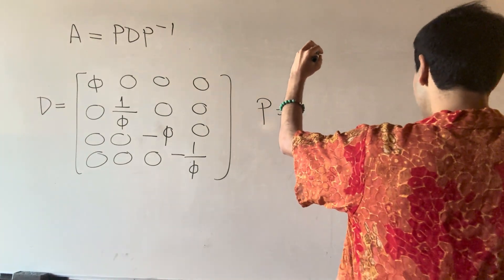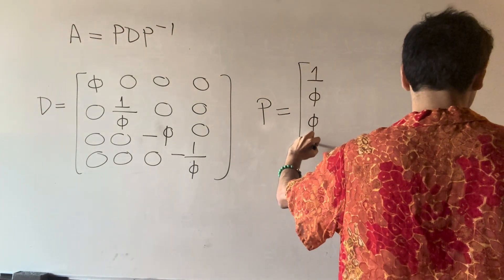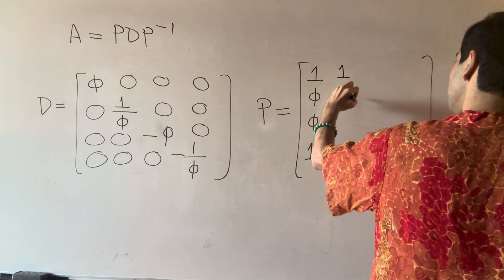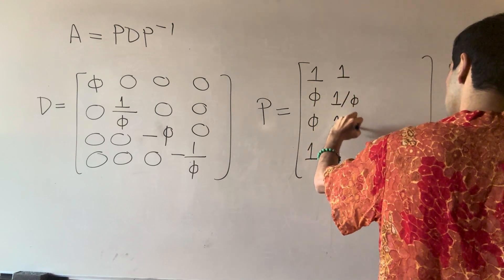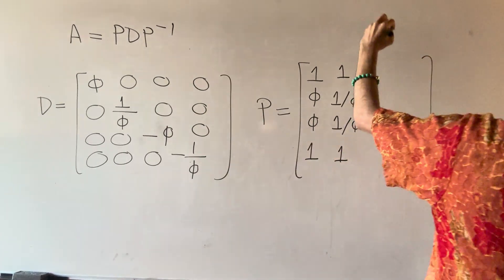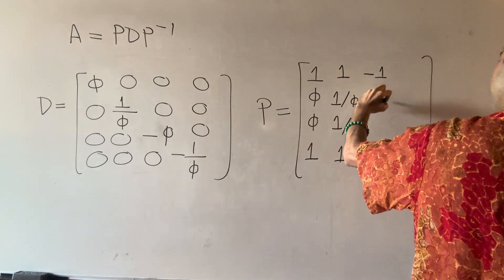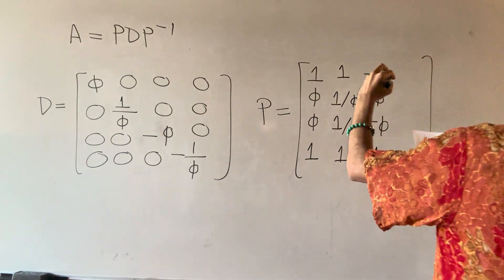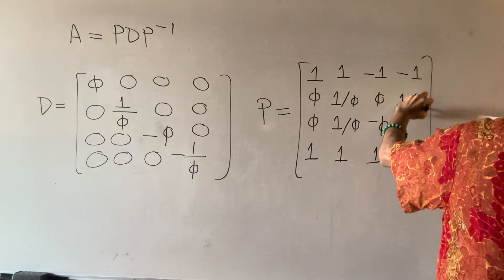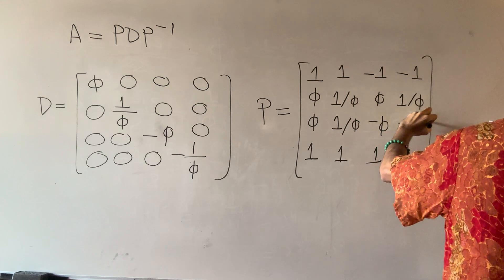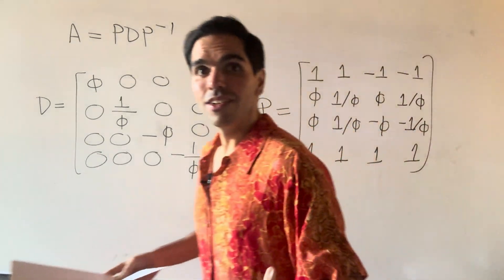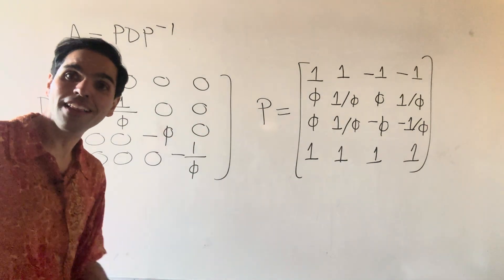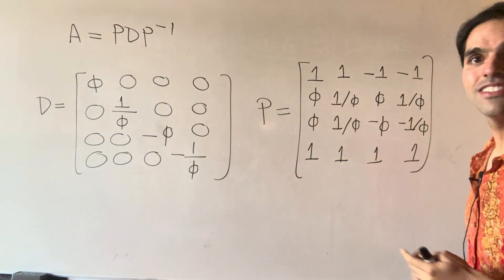So P is: for phi, the column is one, golden ratio, golden ratio, one. For one over phi, we have one, one over phi, one over phi, one. For minus phi, we have minus one, phi, minus phi, one. And last but not least, for minus one over phi, we have minus one, one over phi, minus one over phi, one over phi. Just take a second to admire how elegant this is — it's almost beautifully symmetric.